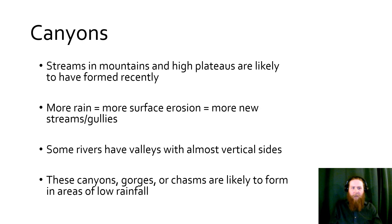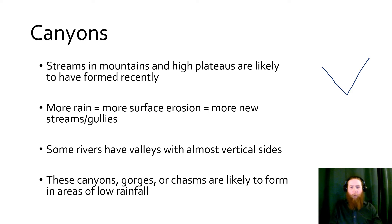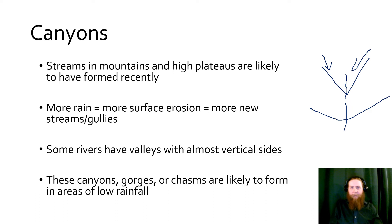Streams in mountains and high plateaus form small gullies that are likely recent — small and without much time to mature and grow larger. As it rains more, we get more surface erosion and new streams and gullies. Eventually we get rivers with very big V-shaped canyons — called canyons, gorges, or chasms — where water flows through the middle over an extended period and wears away the base deeper and deeper. We get these in areas of low rainfall, because heavy rain would bring the sides down with it. Think of the Grand Canyon, where low rainfall produces these very deep structures.